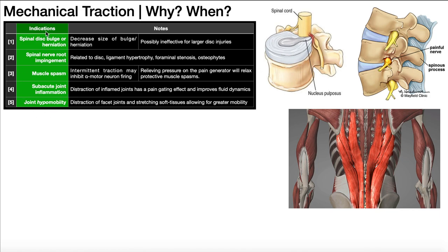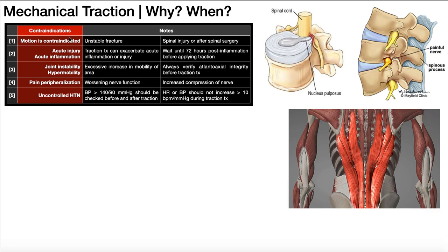Those are the five major indications. What can be equally important is knowing when not to use traction — the contraindications. Obviously, if motion is contraindicated, you would not do traction; this could be due to an unstable fracture, a spinal injury that just occurred, or after spinal surgery. We only do it for subacute inflammation — if there's acute injury or acute inflammation, traction can actually exacerbate that injury and make it worse. As a general rule, wait at least 72 hours after that acute inflammation dies down before applying traction. If there's joint instability — hypermobility — it's also contraindicated. There's no reason to do traction if it's already too mobile, as we can cause an excessive increase in mobility that can actually cause injury.